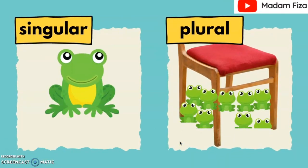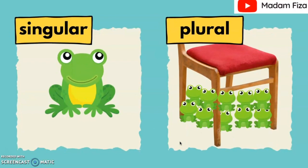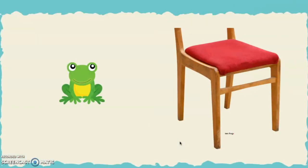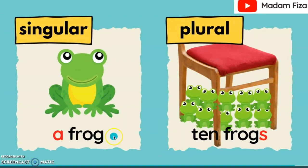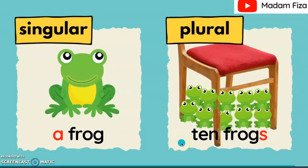And lastly, we have the frogs. How many frogs have we got here? Can you guess the answers? The answer is... A frog is singular. Ten frogs are plural.